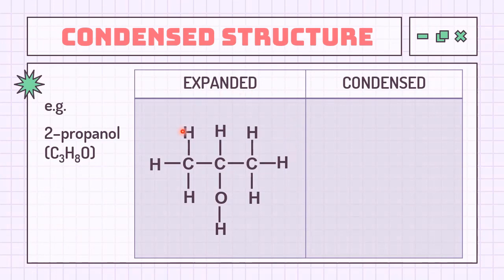Let's see how this expanded structure of 2-propanol is condensed. To form condensed structure, you need to first identify the heteroatoms or functional groups or alkyl groups that are attached to the carbon chain. In 2-propanol, we have functional group OH. And then we need to condense the structure by getting rid of the carbon-carbon and carbon-hydrogen single bonds.